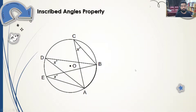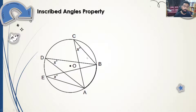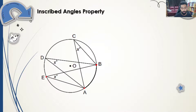Now here's another very important property called the inscribed angle property. It is very similar to what we just learned — inscribed angles will always be subtended by the same arc. In this case, it starts at A, touches point E on the circumference, and comes back to B.